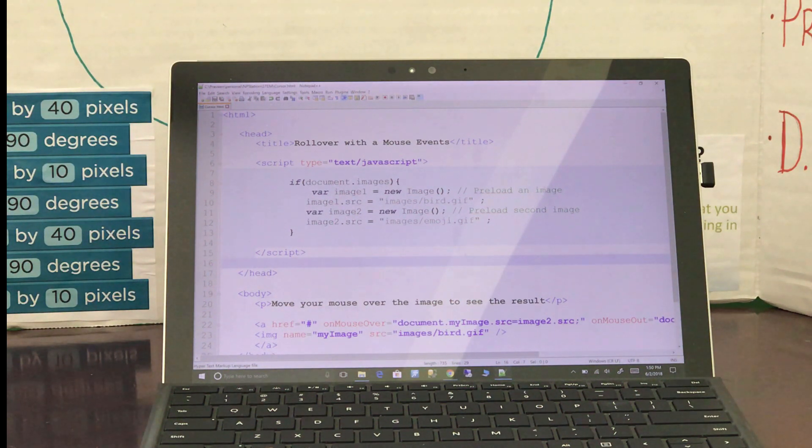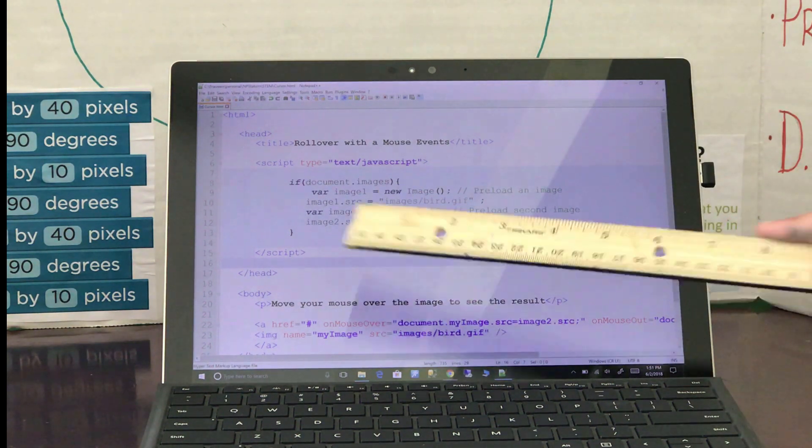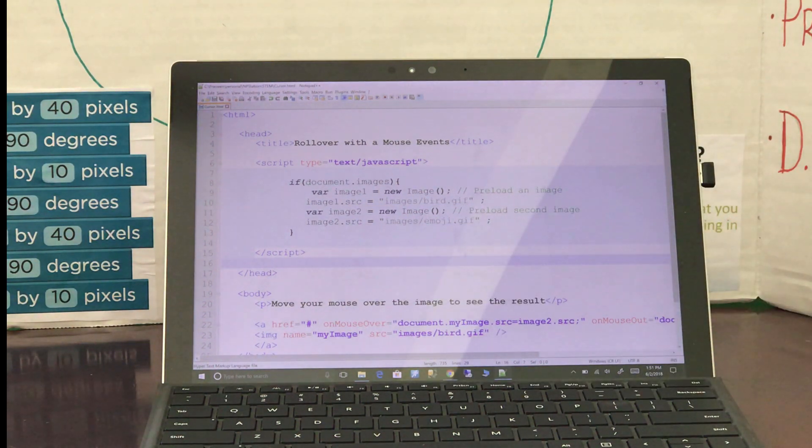This project can be opened using any web browsers like Chrome, Firefox, or Internet Explorer. The if condition checks if your browser supports images. If it does, then we declare two variables called image one and image two. Next we set the source of the images, which image one we set to bird.gif and image two we set to emoji.gif.